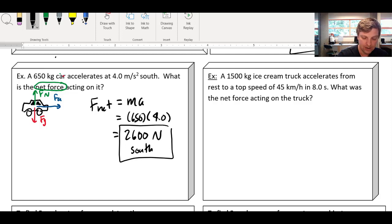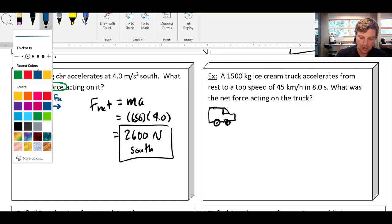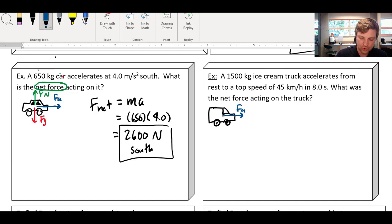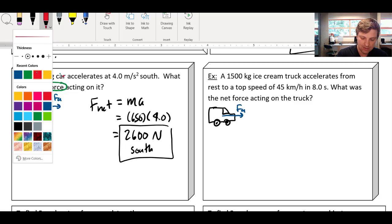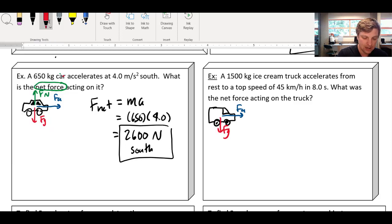Okay, let's do another one. I've got an ice cream truck. Well, I can draw an ice cream truck. That's just a really boxy car. Perfect. Awesome. And this ice cream truck accelerates from rest to a top speed of 45 kilometers an hour. That sounds like every ice cream truck I've ever seen. So it's got some force pushing it here. And again, maybe I've got some gravity pulling down, and maybe I've got a normal force pushing up. And maybe there's some friction. Again, I don't really know, because I'm just looking for the net force on the truck.